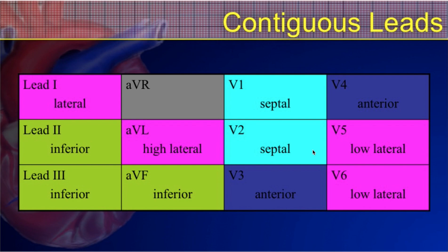Some of those leads look at the same area of the heart. Just try to imagine each lead as a camera angle looking at the heart. Leads 1 and AVL have very similar camera angles — they're both looking at the high lateral wall of the heart, mostly the left ventricle. And V5 and V6 are also looking at the lateral wall — a lower portion of that lateral wall. So all of those leads — 1, AVL, V5, and V6 — are considered contiguous to each other.